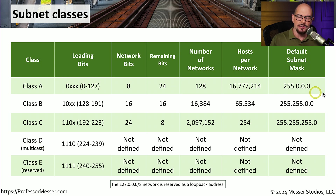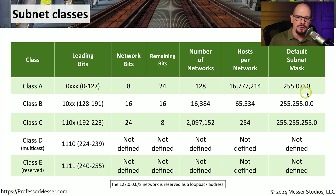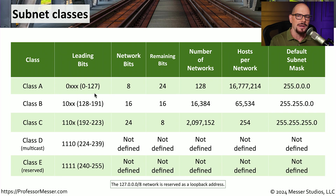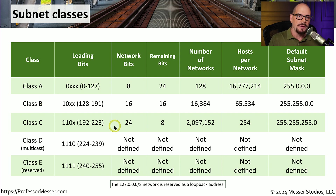The way you can look at an IP address and immediately tell what class it is associated with is the very first octet of the address. If the decimal octet is between 0 and 127 as the first number, it's a class A address. If the first number is between 128 and 191, that's a class B address. And if the first number is between 192 and 223, that is a class C address.